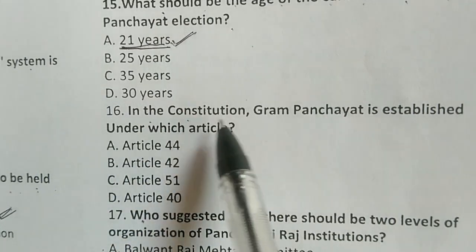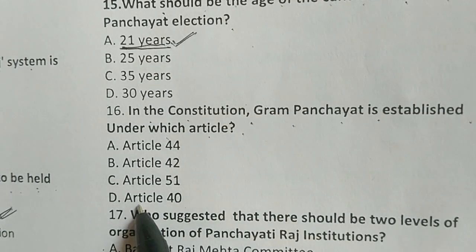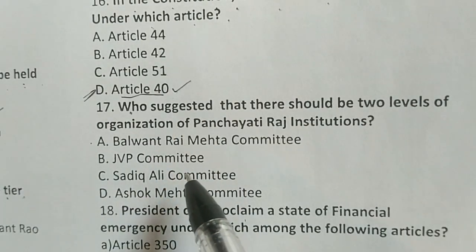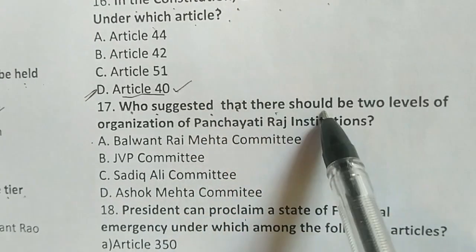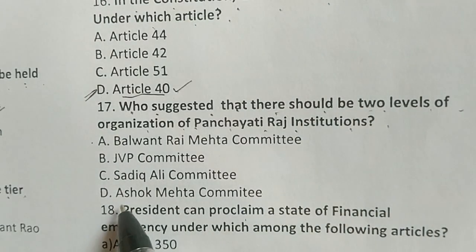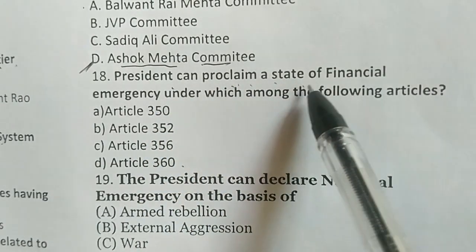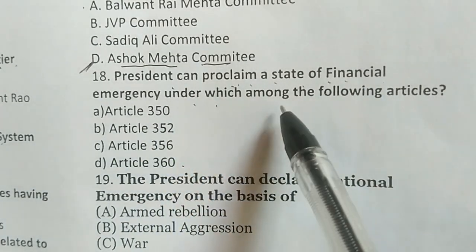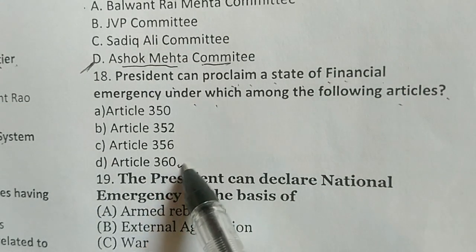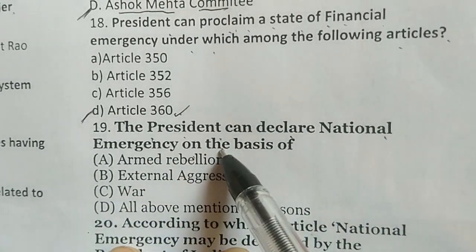In the Constitution, Gram Panchayat is established under which article? The correct answer is Article 40 — option D. Who suggested that there should be two levels of organisation of Panchayati Raj institutions? The correct answer is the Ashok Mehta Committee — option D. Under which article can the President proclaim a state-level financial emergency? The correct answer is Article 360 — option D.